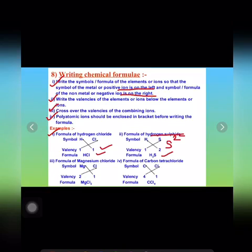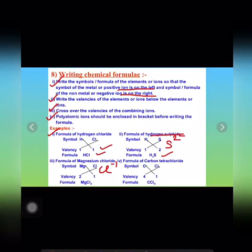Now let us see the example of magnesium chloride. The symbol for magnesium is Mg and for chloride is Cl, with a valency of 1 negative. The valency for magnesium is 2 and for chloride is 1. When we cross over these valencies we get the formula MgCl₂.